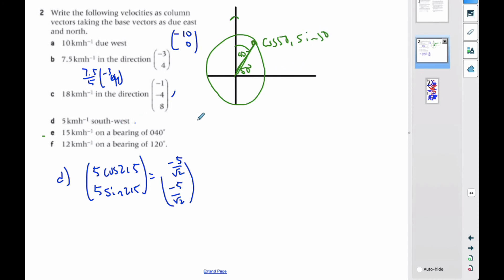And then I multiply it by 15 to make it as long as I want it to be. So, it's going to be 15 cosine of 50, and 15 sine of 50 degrees. And that will be my vector here, if I work that out.